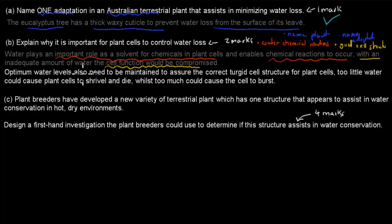And the other reason was, optimum water levels also need to be maintained to ensure the correct turgid cell structure for plant cells. So that turgid refers to plant cells. They want to be that turgid variety. Animal cells don't have to be turgid, but plant cells do. But we have to make sure that we have to maintain the correct cell structure. And too little water causes plants to shrivel and die, whilst too much water causes cells to burst. So now we've said another reason why is to maintain that good cell structure, and given observations of what happens when it's too little and when there's too much water as well. So this is one mark for each of these reasons we mentioned, and that's a 2 out of 2 mark question.